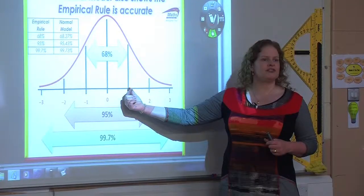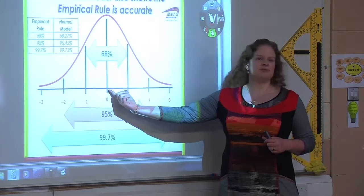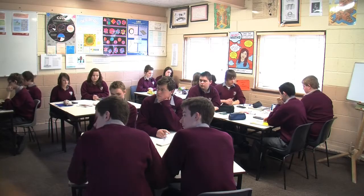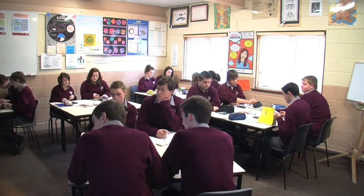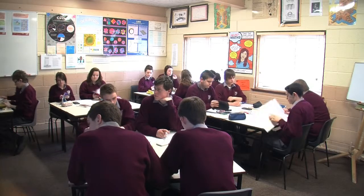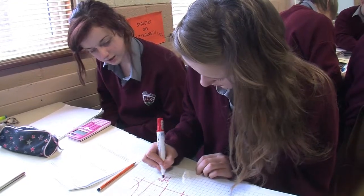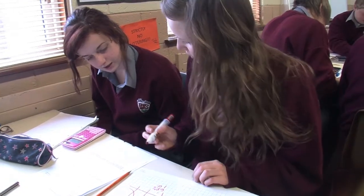So at that point we introduced them to the empirical rule, which was the 68%, the 95% and the 99.7%, and we showed them that that's what made the data normally distributed. In this particular section, this little normal curve should be drawn for every question that you're going to do, because it will be so helpful in working out what the solution is.